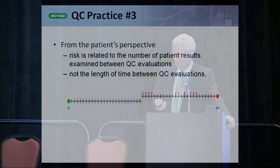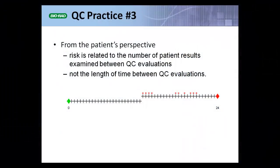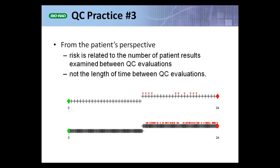Let's assume there are two laboratories. Both laboratories test QC once a day, once every 24 hours. And in both laboratories, an out-of-control condition occurs somewhere in the middle of the day, adversely affecting patient results.